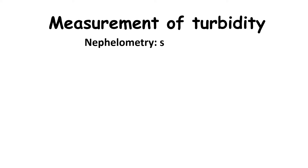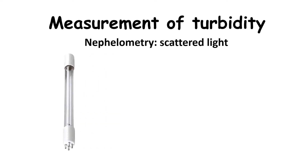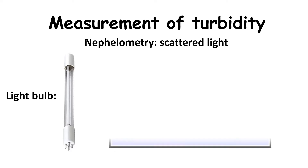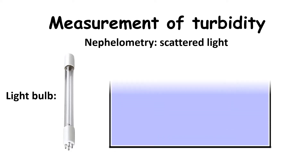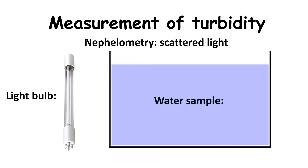One common method to measure wastewater turbidity is called nephelometry, which uses scattered light. ISO 7027 and EPA 180.1 allow only infrared or white light as light sources for the test.